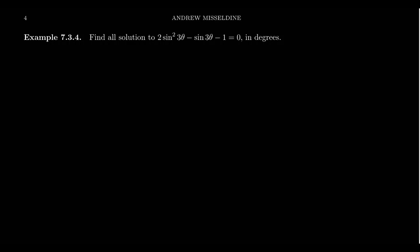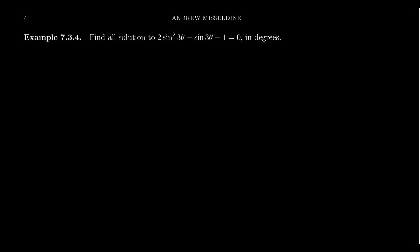In this video, we want to solve quadratic trigonometric equations where the period has been changed. Notice in this example, we have 2 sine squared of 3 theta minus sine 3 theta minus 1 equals 0, and we want to solve this for all possible degree solutions.